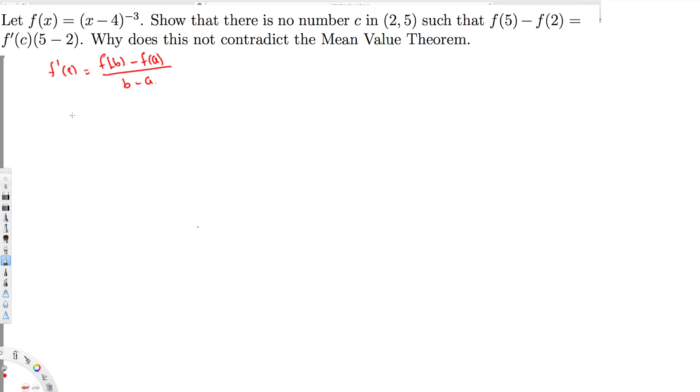Let's see what happens. Let's take the left-hand side and solve this. The left-hand side is f(5) minus f(2), so I have to substitute these values into the equation. If I substitute for the first one, I will get 1 over (5 minus 4) cubed, which is just 1.